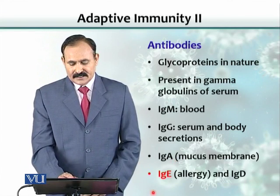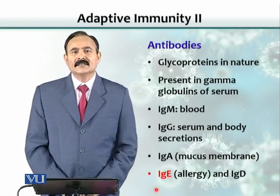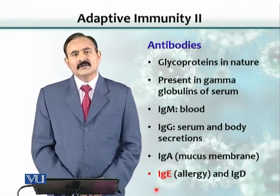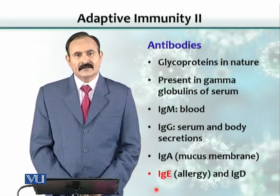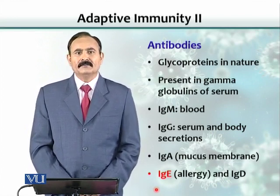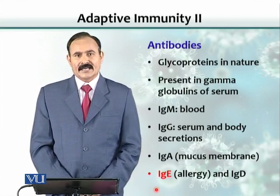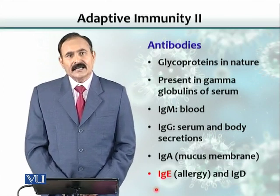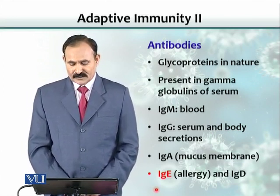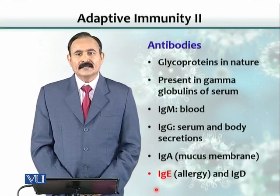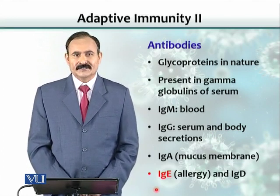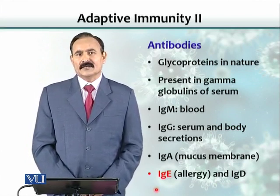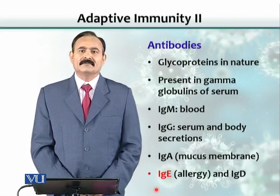IgA is another class of antibodies specifically found on the surface of mucous membranes — in our oral cavity, saliva, tears, and milk, where IgA is most abundantly present. IgE is another class of antibodies that is basically induced by allergens. Allergens are also antigens, but the consequences of these antibodies are harmful to the body because they damage body cells.